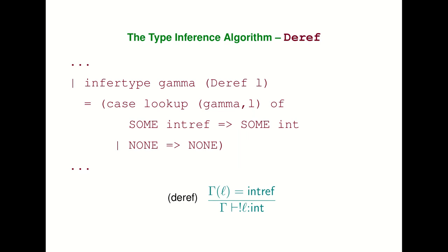Each typing rule leads directly to its implementation. The dereference rule says: look in the context to see that the location has type intref, and if it does, the dereference expression has type int. So in the type inference algorithm, when we see the expression deref l, we look up location l in gamma; if we get back that it's an intref, we return type int. If we don't find it in the context, we return none, corresponding to the case where l is not in the domain of the partial function gamma.